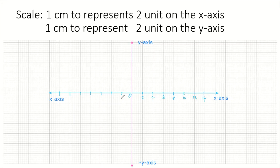And on the negative side here it's going to be negative two, negative four, negative six, negative eight, negative ten, negative twelve. So we're finished with the x-axis.